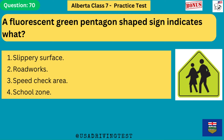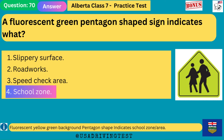A fluorescent green pentagon-shaped sign indicates what? 1. Slippery surface. 2. Roadworks. 3. Speed check area. 4. School zone. The answer is 4: school zone. A fluorescent yellow-green background pentagon shape indicates a school zone or area.